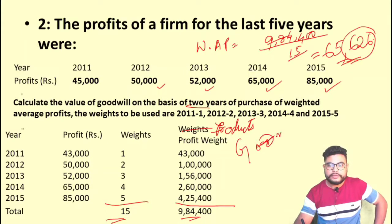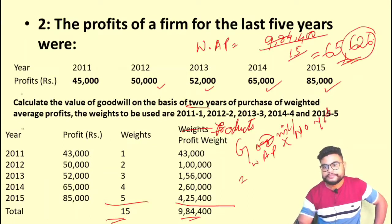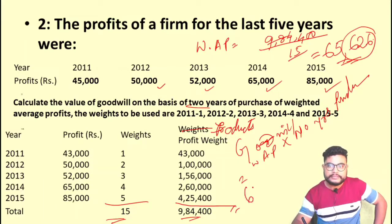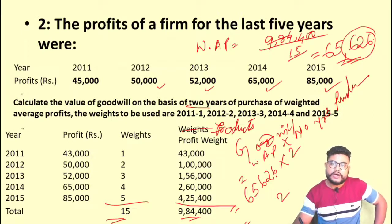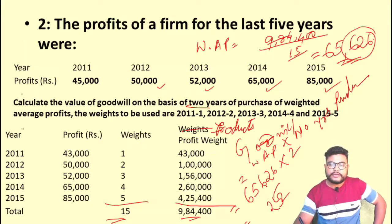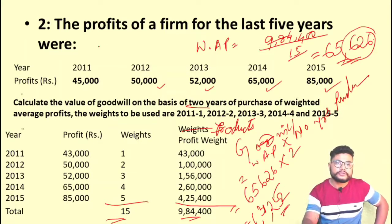Now calculate Goodwill = Weighted Average Profit × Number of Years of Purchase = 65,626 × 2 = 1,31,252.